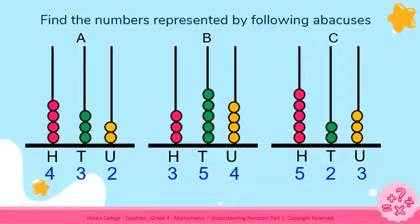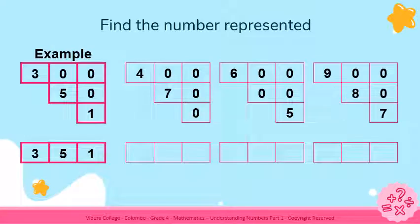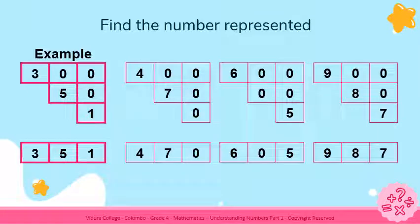This is the same as the abacus. Look at the example — on top you can see 3 boxes that represent hundreds, then 2 boxes that represent tens, and the last box represents units. When we add those boxes together, you get the answer 351. Now find the numbers represented by the other boxes. The answers are 470, 605, and 987. They are easy, aren't they?